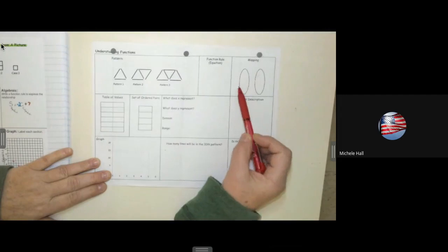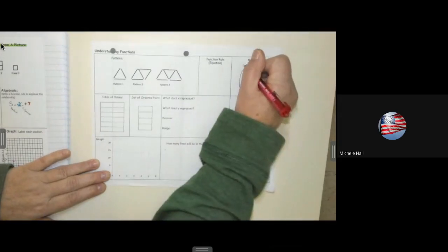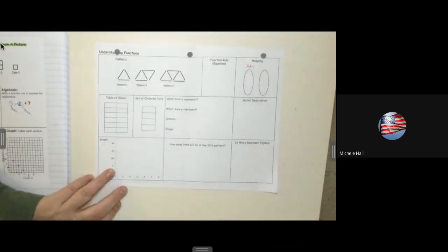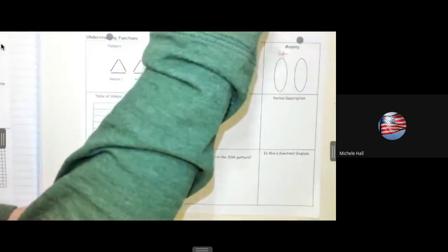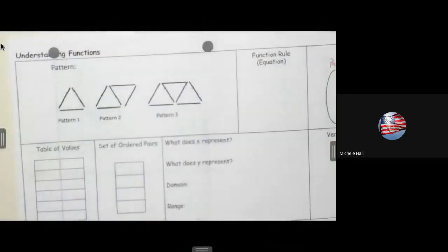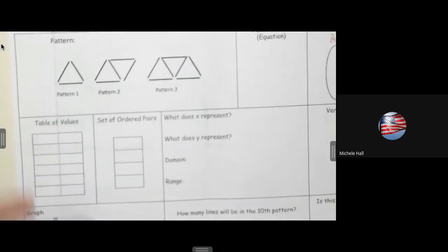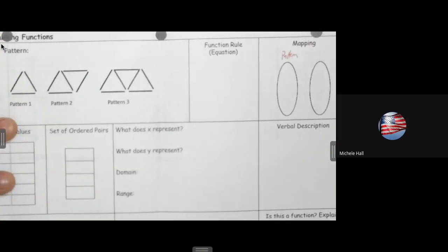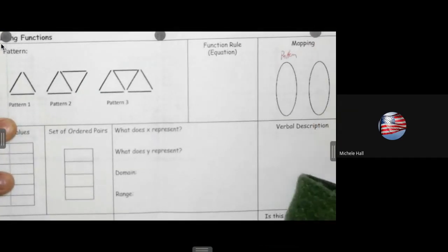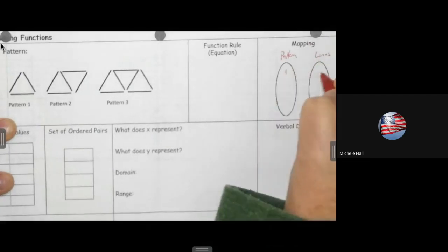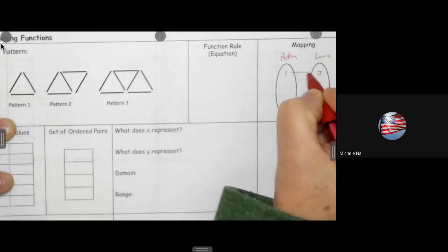That is where you're taking your numbers from your table of values and you're putting them in the mapping. Like this would be for the pattern number, and these are triangles that we're counting. What are we counting on this? What do you think you're counting? Lines. Why not the triangles? Because it's not a closed figure, right? It's open figure. So you'd be counting the lines. So I would say that pattern and lines.